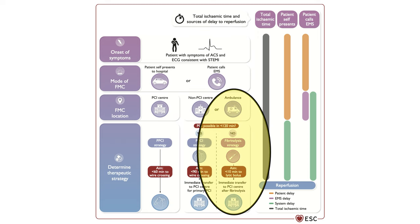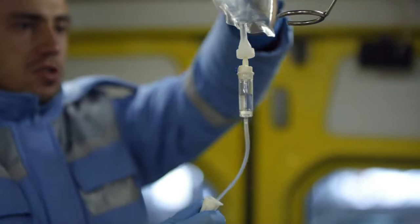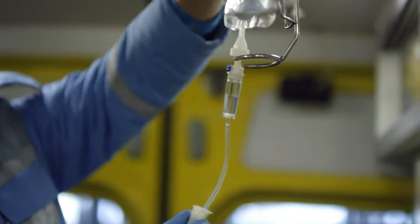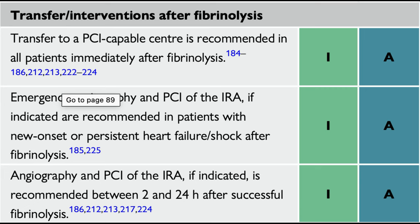If you foresee that PCI will be delayed beyond 120 minutes from the time of diagnosis, then give the patient a thrombolytic agent within 10 minutes. Fibrinolytic therapy initiation should not be delayed waiting for troponin results. Pre-hospital fibrinolysis has advantages compared to in-hospital fibrinolysis, particularly when administered in the first two hours after symptom onset. After thrombolysis, all patients should go for angiography. Even uncomplicated cases with apparently successful reperfusion should go for angiography between 2 and 24 hours, because there is a high chance of reocclusion after thrombolytic therapy.